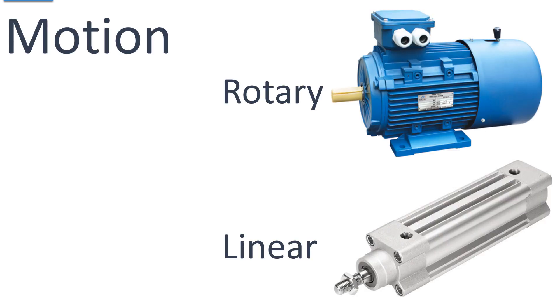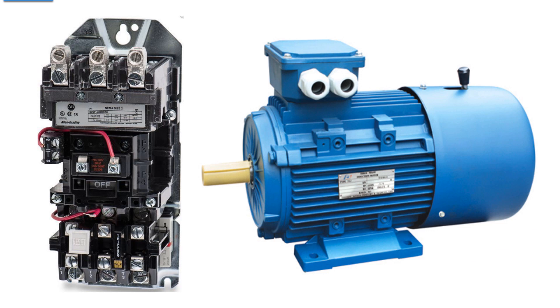One of the goals of a digital output from a PLC is motion, and there are two forms of motion available: rotary and linear. Rotary motion is controlled by a motor starter.